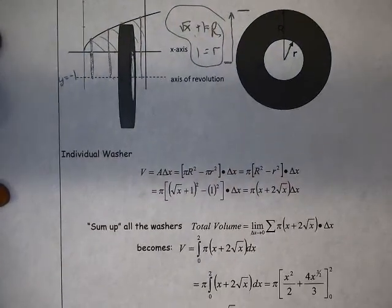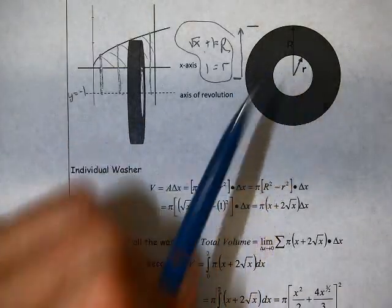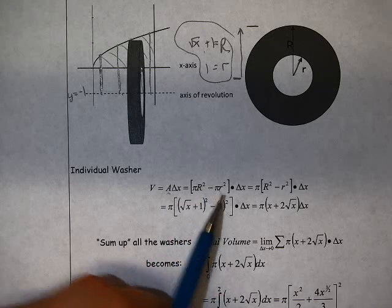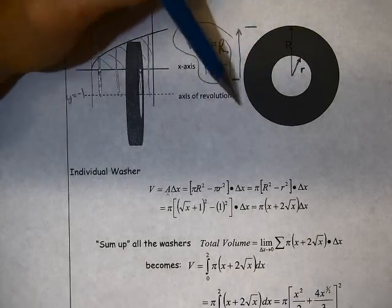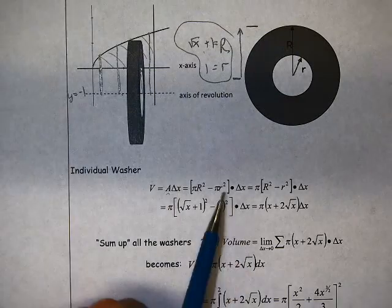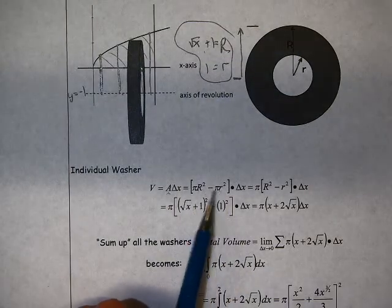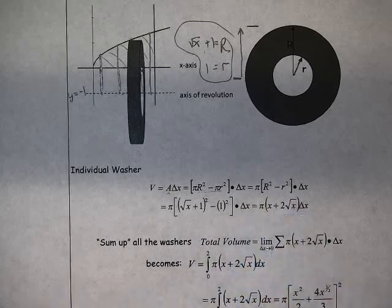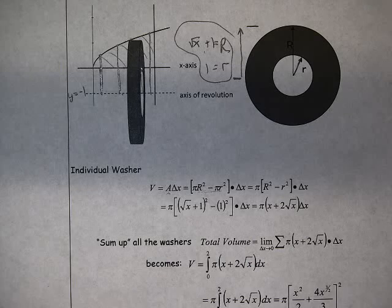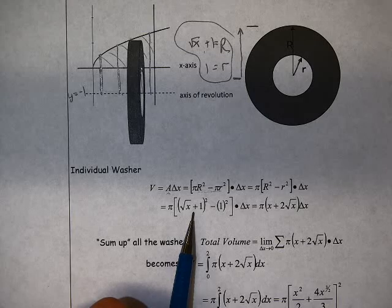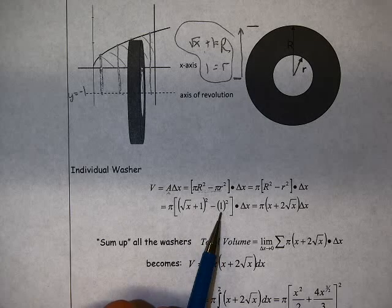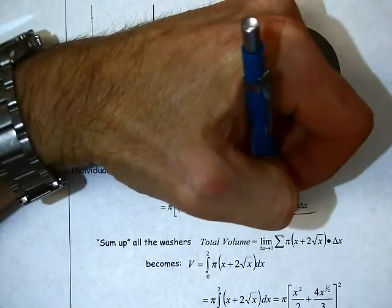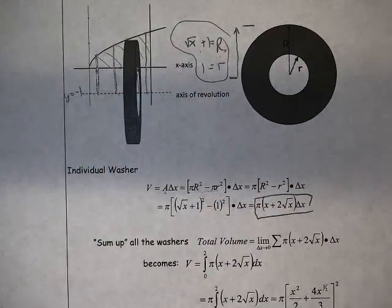Once we do that, we can think about what's the area of this single washer. Well, the area is pi big R squared minus pi little r squared. So if you find this entire area here and we subtract out the empty part in the middle, we get this washer or ring here. So that's the area of an individual washer times delta x. We can factor the pi out. We get big R squared minus little r squared times delta x. And in this case, big R is the square root of x plus 1, little r is 1. We square those, simplify a little bit, and we get this for the volume of one of our individual washers.